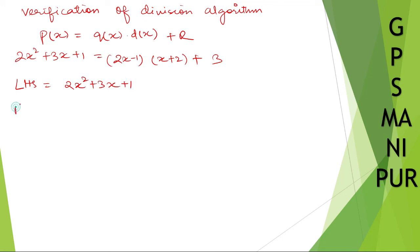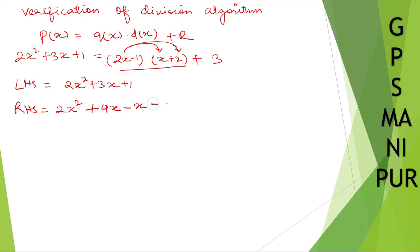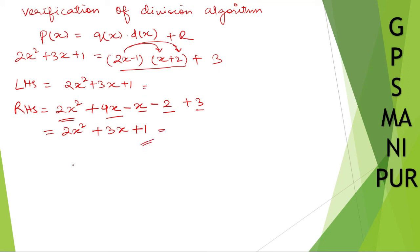The right-hand side: multiply out (2x minus 1)(x plus 2) plus 3. So 2x into x gives 2x squared, 2x into 2 gives 4x, minus 1 into x gives minus x, minus 1 into 2 gives minus 2, plus 3. Combining: 2x squared plus 4x minus x equals 3x, and minus 2 plus 3 equals 1. So right-hand side equals 2x squared plus 3x plus 1, which equals the left-hand side. Hence verified.